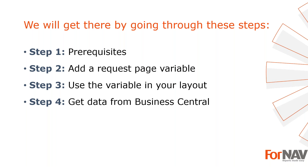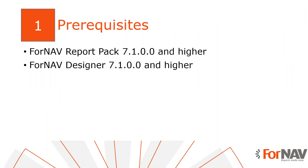The steps are: prerequisites — what do I need to get going; step 2 — add a request page variable; step 3 — use the variable in my layout; and the fourth and final step — use my variable to get data from the Business Central database. For today I have a Business Central on-premise server with the 2023 Wave 1 release, the ForNAV Customizable Report Pack installed, and the ForNAV Designer on my PC, which can be downloaded from the ForNAV website.